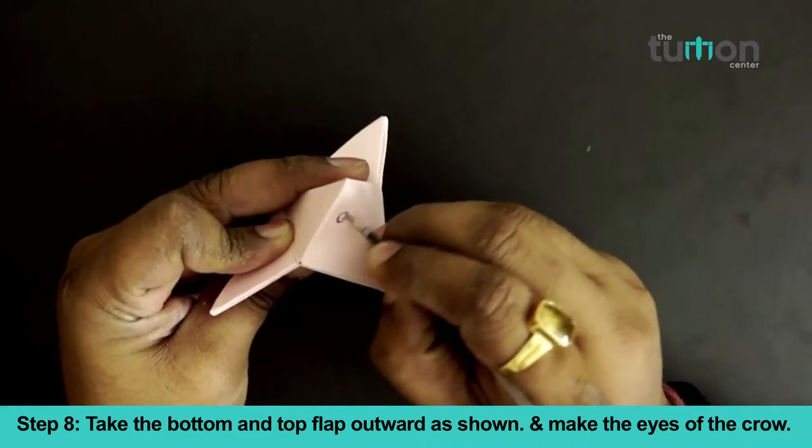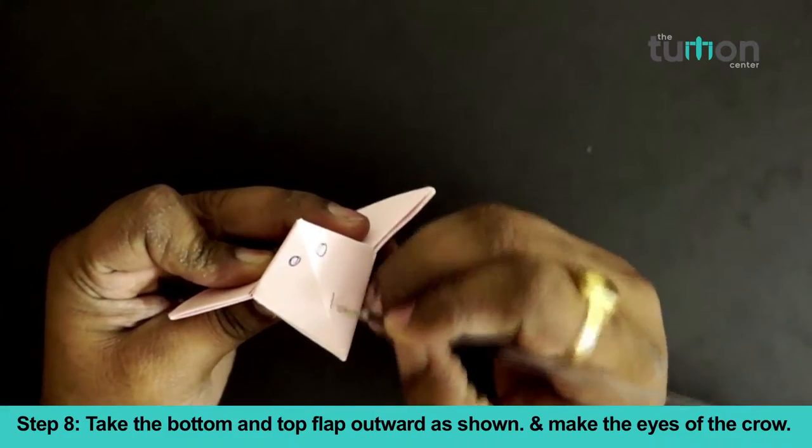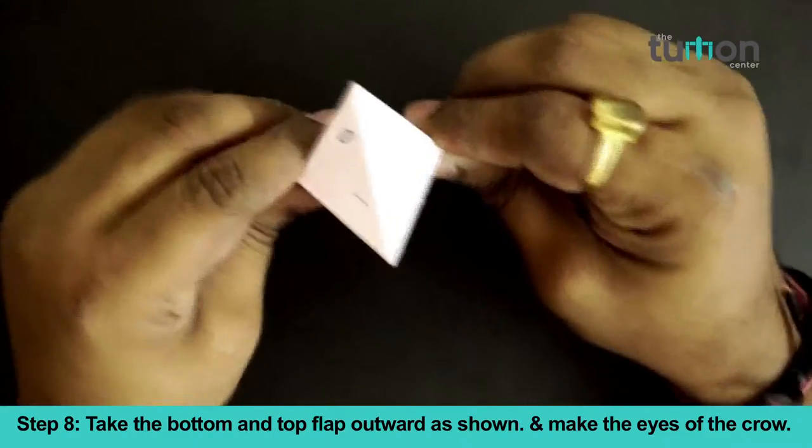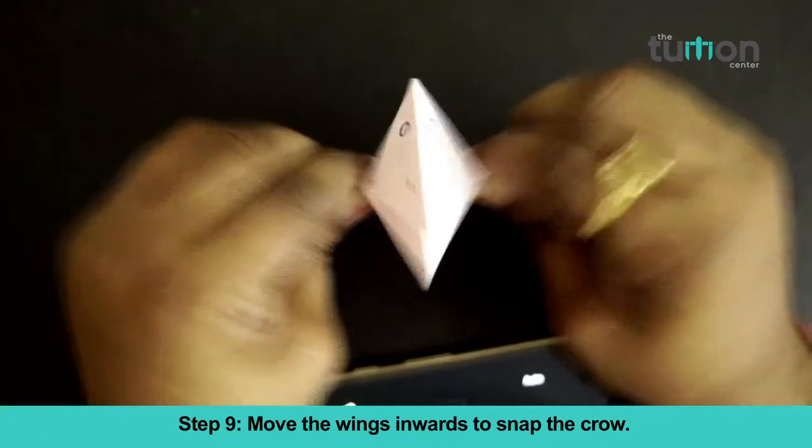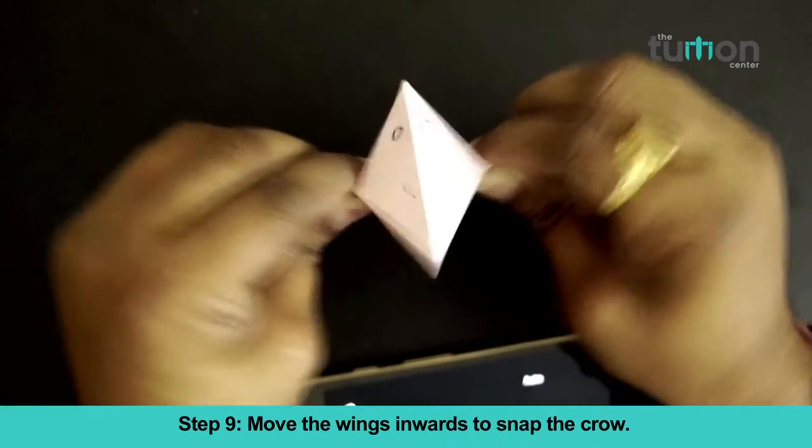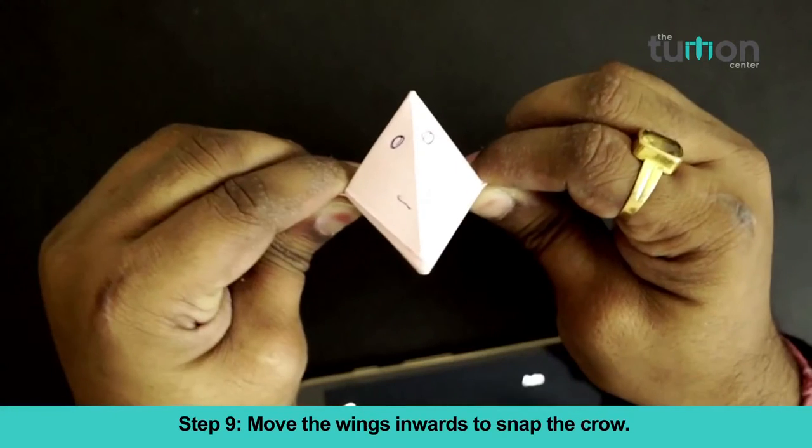Make the eyes of the crow. Move the wings inward to snap the crow. Your paper talking crow is ready. Recap of paper talking crow.